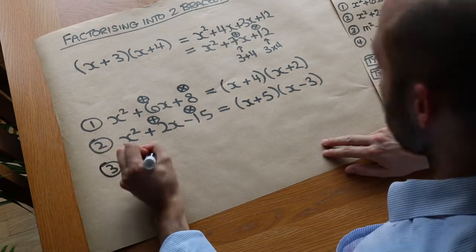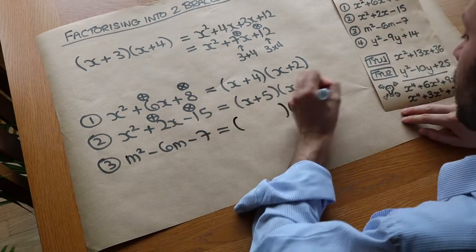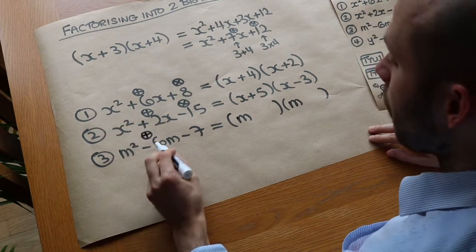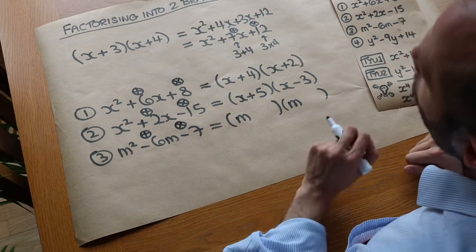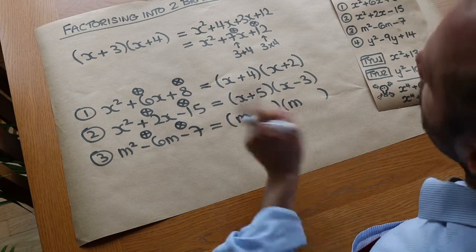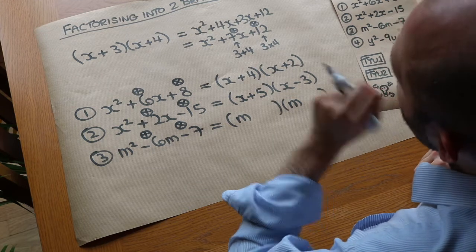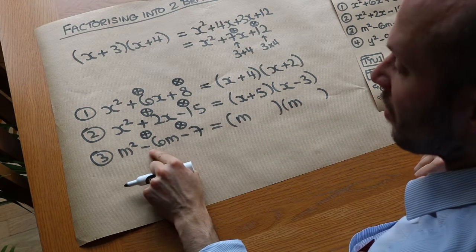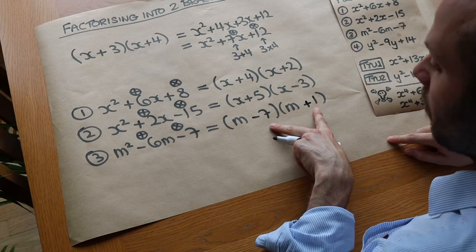Next: m squared minus 6m minus 7. Don't be concerned that we're using m — each bracket just starts with m instead of x. We need two numbers that add to give minus 6 and multiply to give minus 7. Since 7 is prime, the only factors are 7 and 1, and one must be negative. Minus 7 plus 1 gives minus 6, so the factorisation is (m − 7)(m + 1).